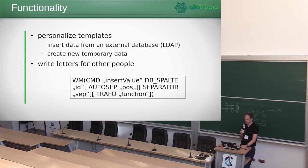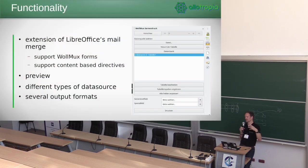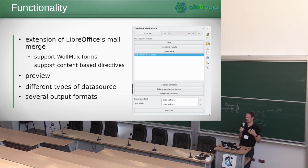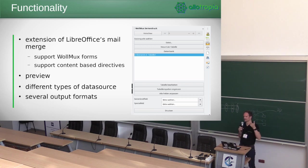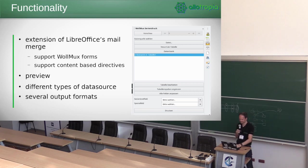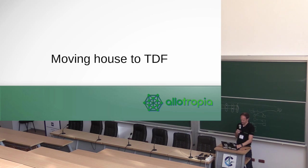That's a screenshot from the mail merge extension. There's support for forms — you can virtually print a PDF with form support. And you can support those content-based directives, which means you can print five, six, or seven different versions of your document with sections included or removed. For example, one version of a work contract for the employee, another for the HR department, and another for the workplace union — with different texts included or excluded. You can also switch between data sources, so you can have a production version and a test version of your database. Several output formats are supported: PDF, print, or just fill an ODT document and continue editing.